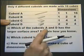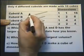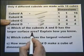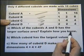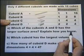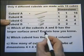Which of the cuboids A and D has the larger surface area? Explain how you know. Well, if we just show the working out of the surface area that will do the explanation.